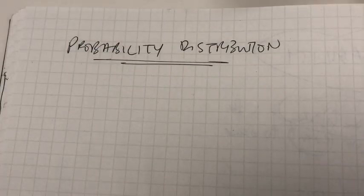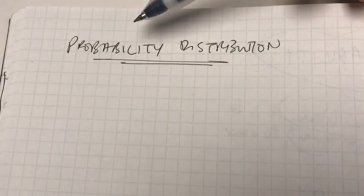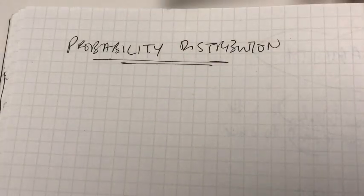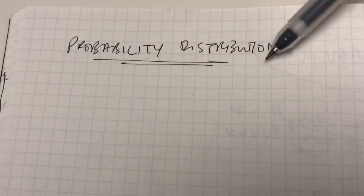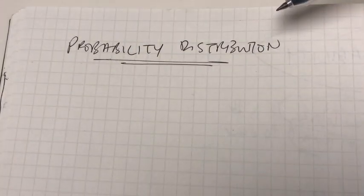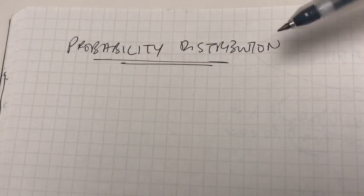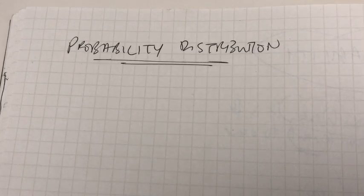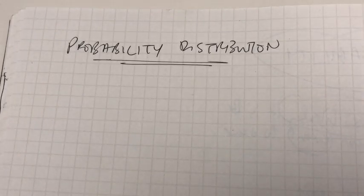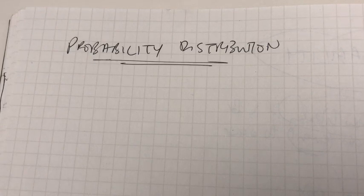We know what a probability is, which is the likelihood of something happening. The next thing we need to learn is probability distribution. Probability distribution is basically a list of all possible outcomes of an experiment and the probability of each of those outcomes. Since we are social science students, the sort of experiments we conduct are normally associated with human behavior.